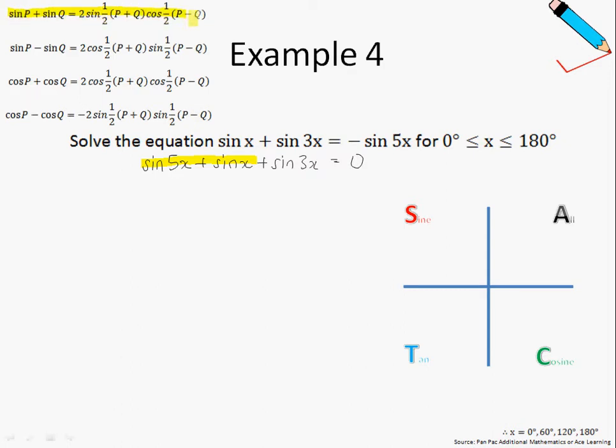Let me make it more obvious. So I'll be using the first formula over here. So similarly, let us identify the parameter. So P will be 5x and Q will just be x.